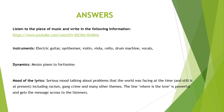Using a different colour pen, give yourself a tick if you've got the answer correct, or add in any missing information. The instruments being used are the electric guitar, synthesizer, violin, viola, cello, drum machine, and vocals. The dynamics being used are mezzo piano to fortissimo, which means it starts off quite quiet and goes all the way through to being very loud. The mood of the lyrics is serious, talking about problems that the world was facing at the time and still is at present — including racism, gang crime, and many other themes. The line 'where is the love' is powerful and gets the message across to the listeners. Please pause your video now.